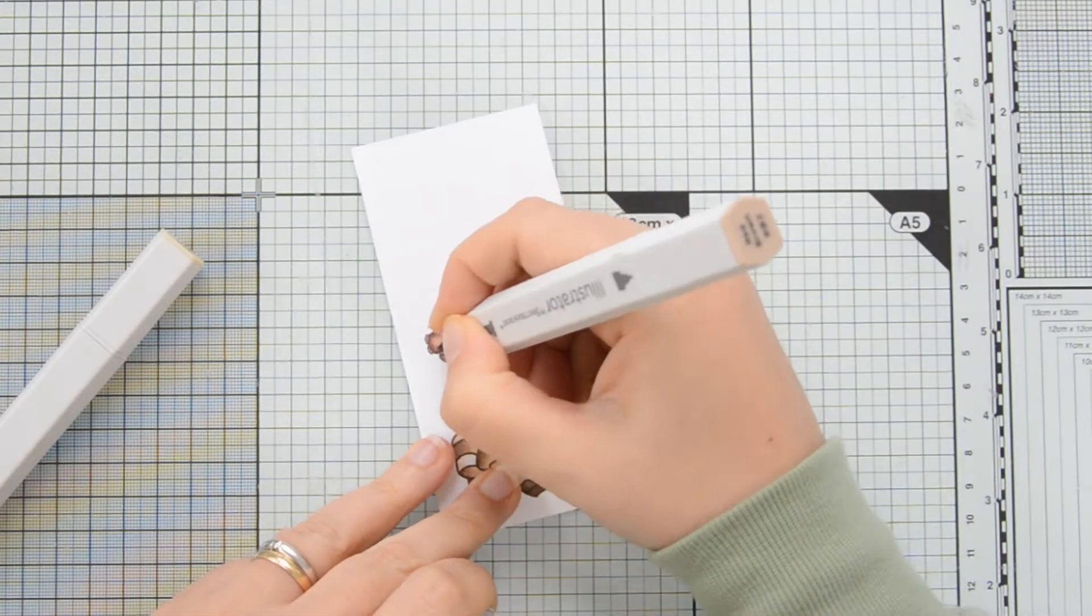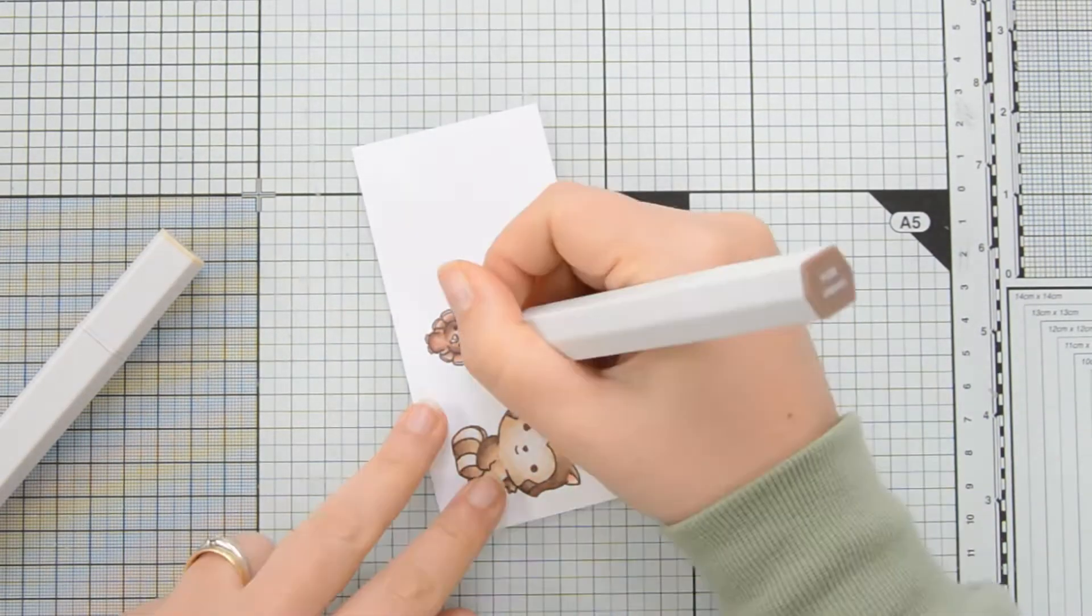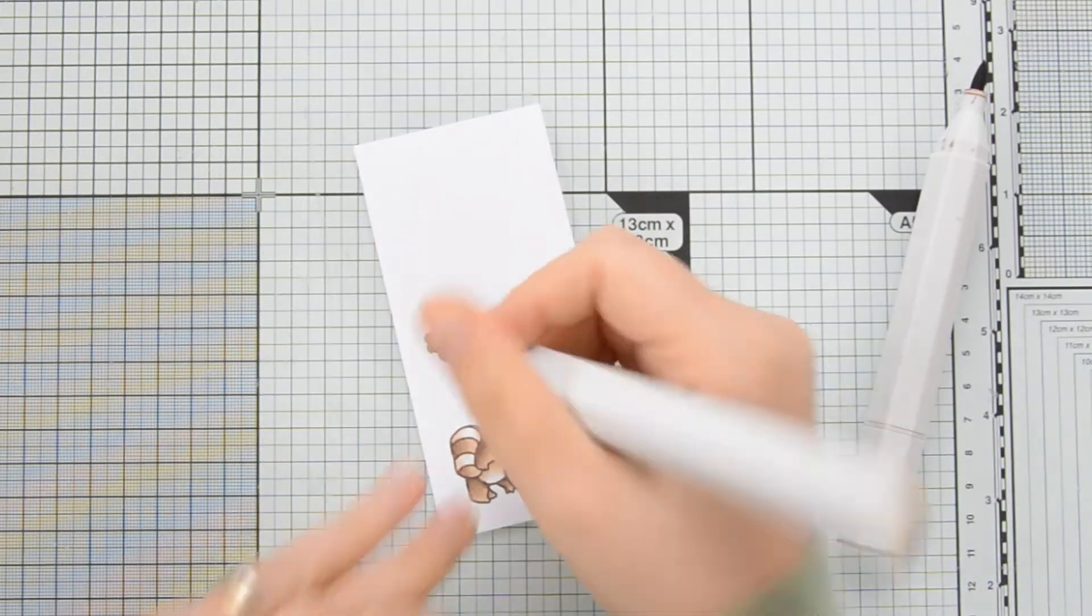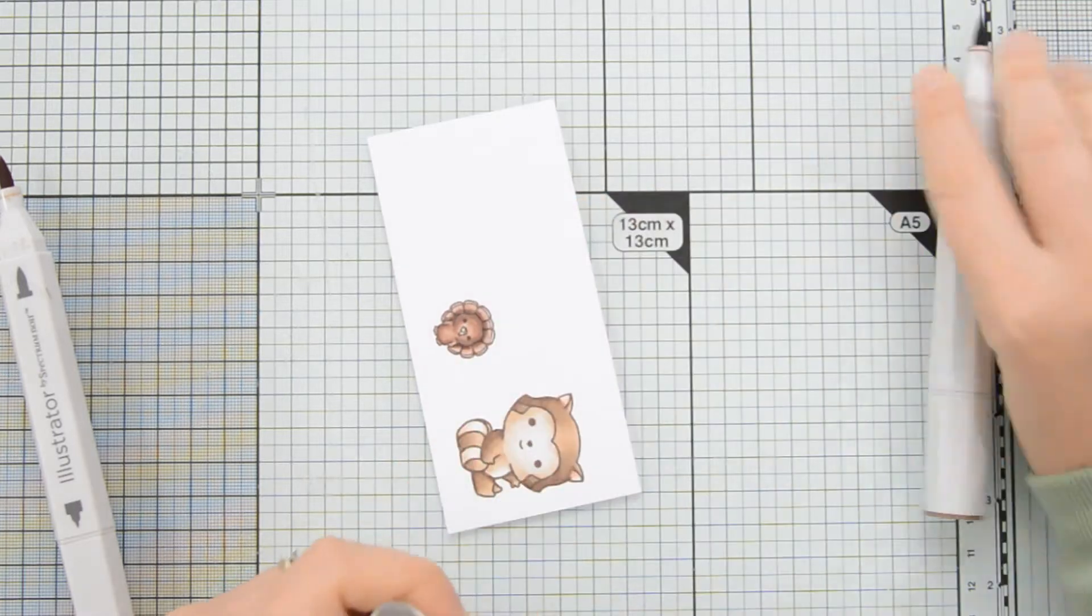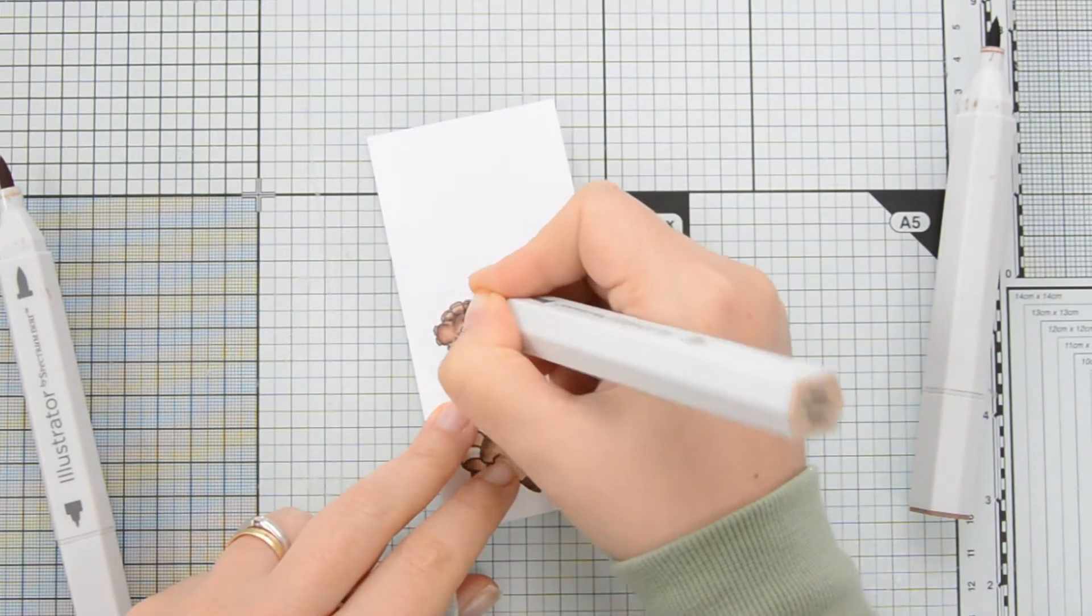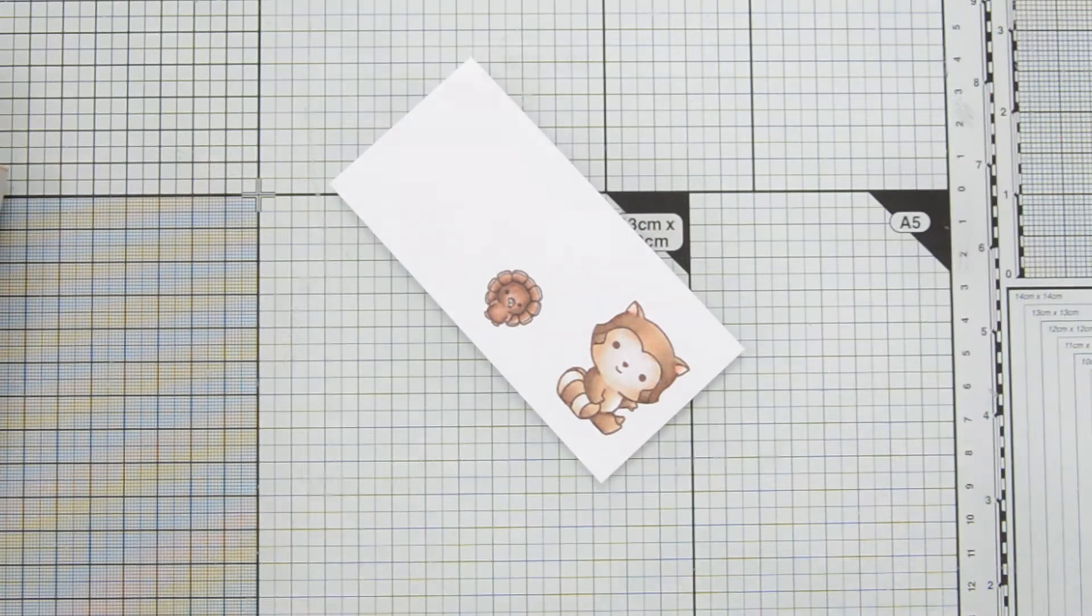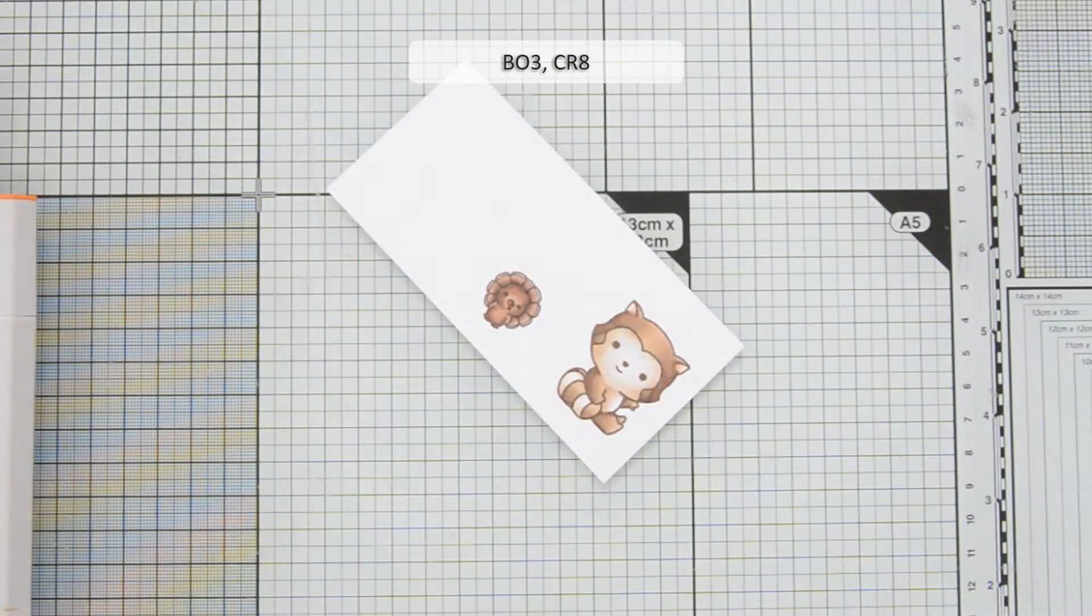I'm also going to go in with a second layer of color in order to intensify the contrast and create even more dimension on my images and then I'm going to finish off my coloring by adding some BO3 to the beak and the feet of the turkey and some CR8 to the snood.